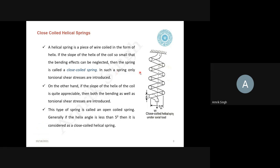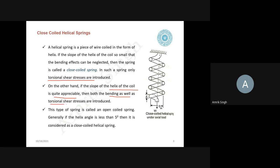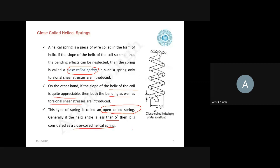In this type of spring, only torsional shear stresses are involved. If the slope of the helix of the coil is large, then both bending as well as torsional shear stresses are introduced. This is the difference between the closed coil helical spring with a small helix angle and the open coil helical spring with a large helix angle. If the helix angle is less than five degrees, it is a closed coil helical spring; if more than five degrees, it is an open coil helical spring.